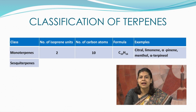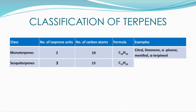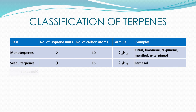Sesquiterpenes have 3 isoprene units, so they have a molecular formula C15H24, and an example of this class is farnesol. Next are diterpenes, which have 2 monoterpenes or 4 isoprene units.